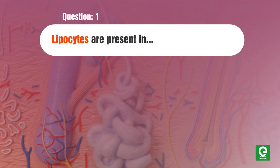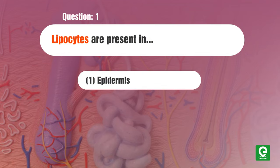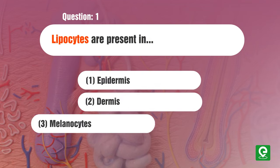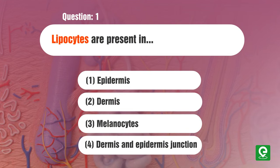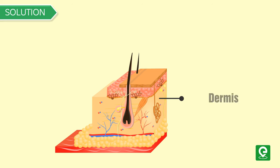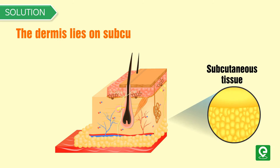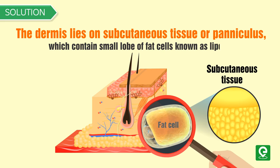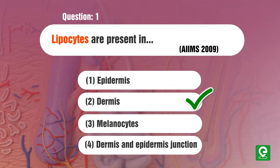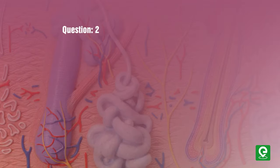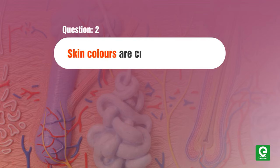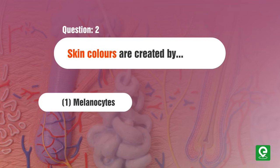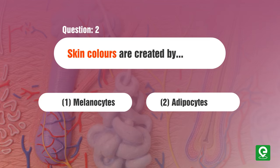Question 1: Lipocytes are present in — (1) epidermis, (2) dermis, (3) melanocytes, (4) dermis and epidermis junction. This question was asked in AIIMS 2009. Solution: The dermis lies on subcutaneous tissue or panniculus, which contains small lobes of fat cells known as lipocytes. Hence option 2 is the correct answer.